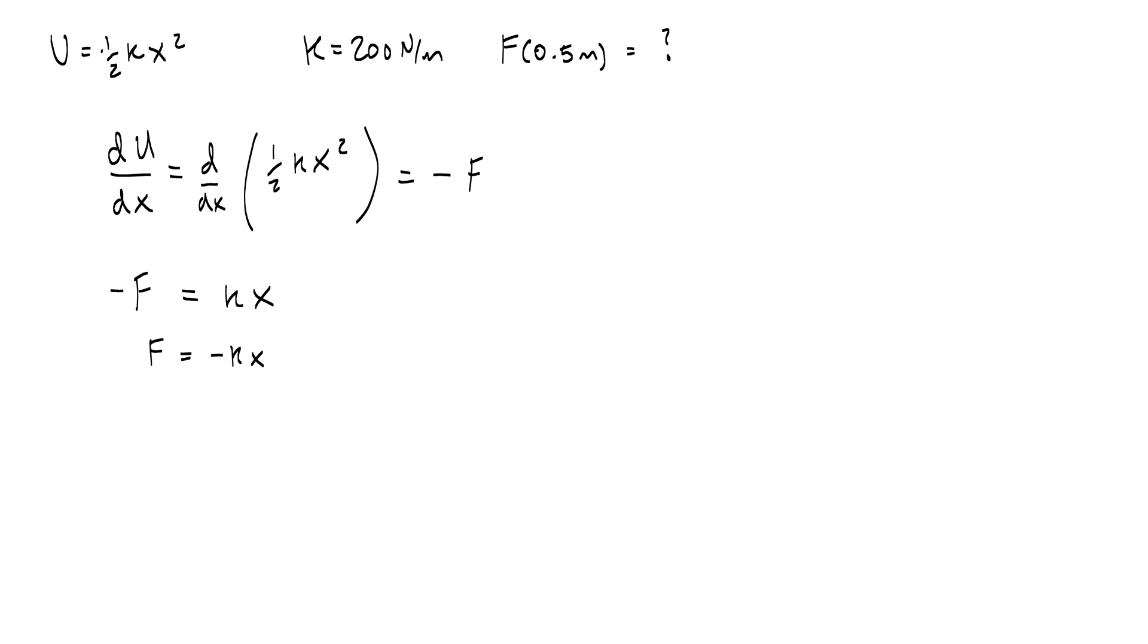If I did this with numbers, I could write the potential graph as half of k, or 100 x squared, and then I would write it like this. If I want to find the negative force, then I take the derivative of u with respect to x, which I can really write that as d/dx 100 x squared, and then I would bring the two down so that I get negative F equals 200 x, and now I know that the force equals negative 200 x.